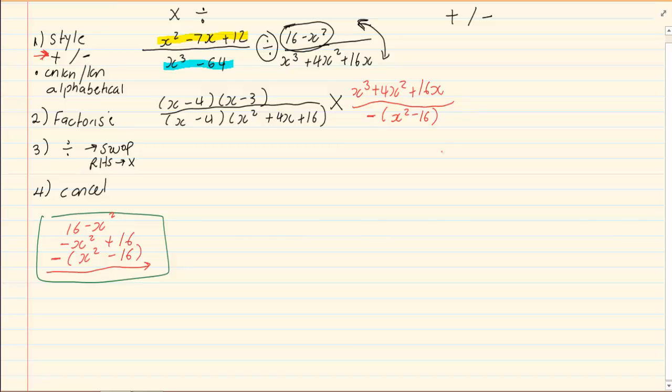Now, we are going to factorize the expression on the right hand side. On the top, we are going to take out a common x. So, we have got x squared plus 4x plus 16. The denominator is negative x minus 4 x plus 4. We are going to rewrite the expression on the left hand side.